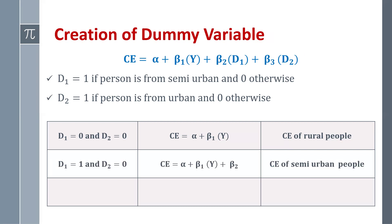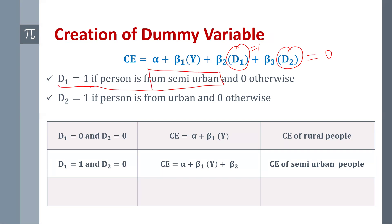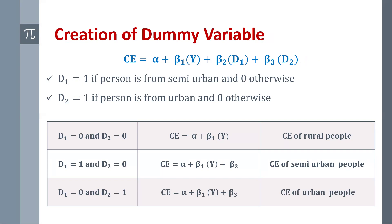When D1 equals 1 and D2 equals 0, the person is from semi-urban, and consumption expenditure equals alpha plus beta 1 times Y plus beta 2 — the consumption expenditure of semi-urban people. When D1 equals 0 and D2 equals 1, the person is from urban, so consumption expenditure equals alpha plus beta 1 times Y plus beta 3 — the consumption expenditure of urban people. This is how we create dummy variables with three categories.